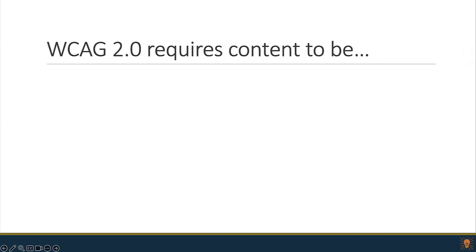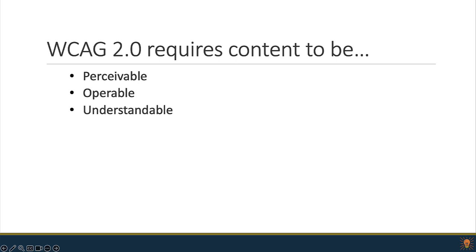Let's talk about the principles behind WCAG. In general, WCAG requires that your content be four things: it should be perceivable, operable, understandable, and robust. These are the guiding principles that lead to the specific guidelines on how content should be formatted and how it should work.